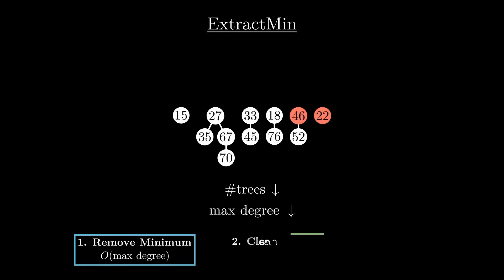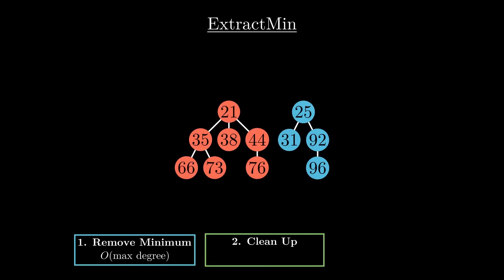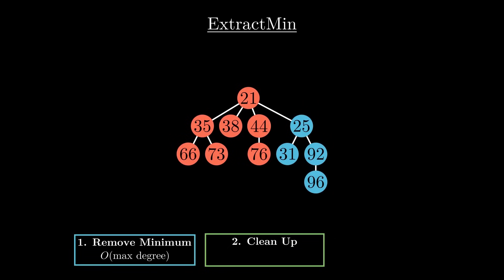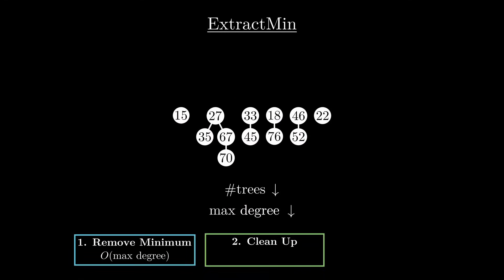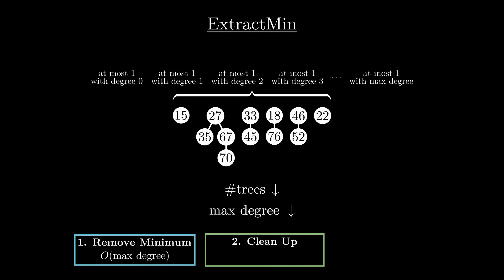After removing the minimum node, we start the cleanup phase, reducing the number of trees by merging them. To merge two trees, we attach the one with the larger key to the one with the smaller key — only this way do we preserve the heap property. The degree of the winning tree increases by one. The trick is to merge trees with the same degree until all trees have a different degree: at most one root with no children, one root with one child, and so on up to the maximum degree. This ensures that including degree zero, the number of trees after cleaning up is at most the maximum degree plus one.